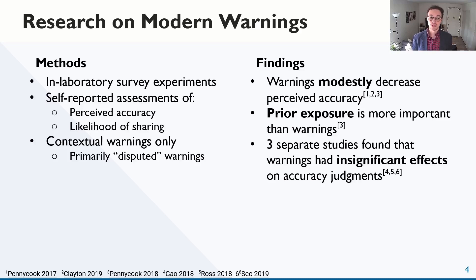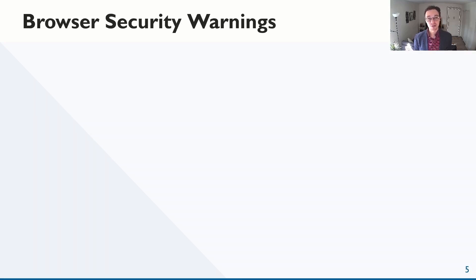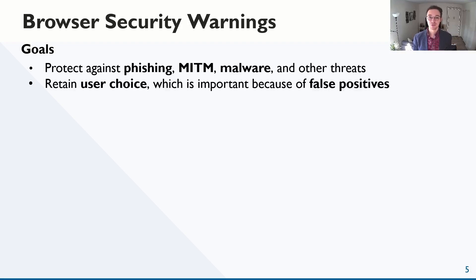Our research asks whether disinformation warnings can protect users, and specifically whether they can affect user beliefs and behavior. Although the evidence presented here is discouraging, we know from usable security research that this is possible for other forms of online abuse. That research concerns browser warnings, which are essential tools for protecting users against phishing, man-in-the-middle attacks, malware, and other threats.